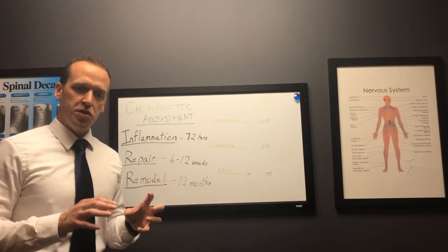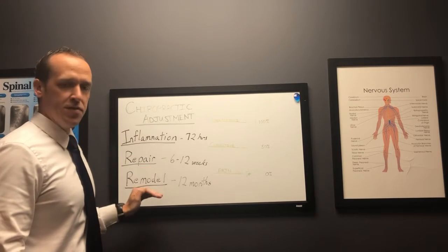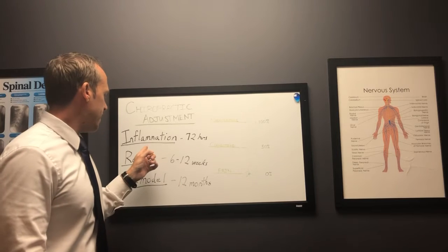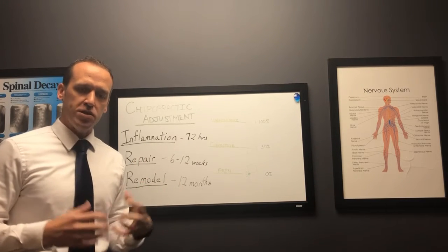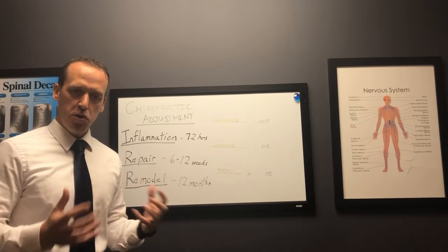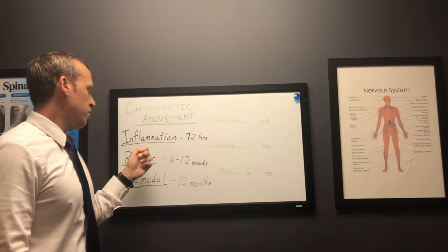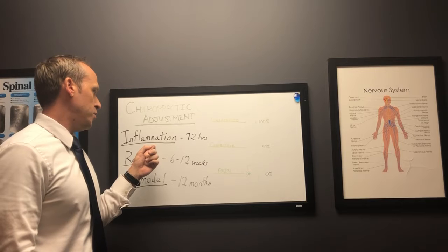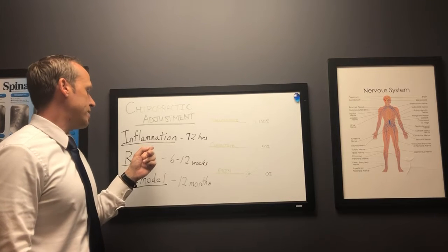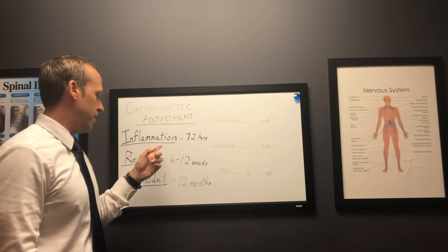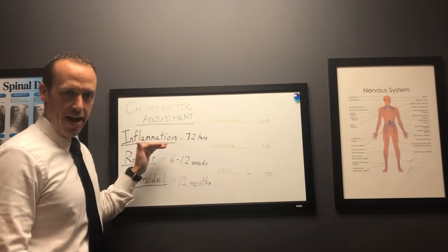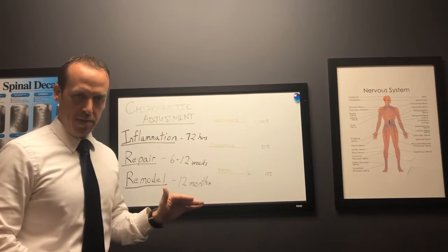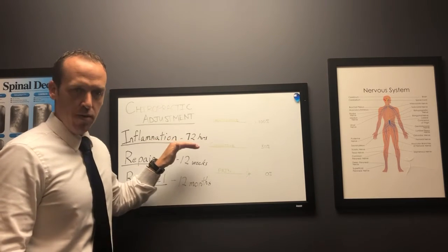Each practitioner will do different things in different stages. When you first get an injury you go into the inflammation stage. Inflammation is always associated with pain. Your general practitioner at this stage will usually give you anti-inflammatories, pain medication, non-steroidal anti-inflammatories to get the inflammation down and decrease the patient's pain within 72 hours.